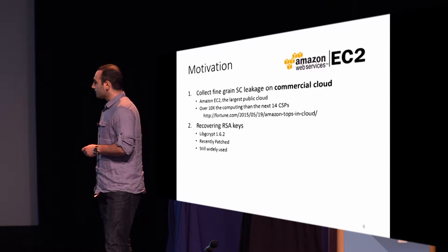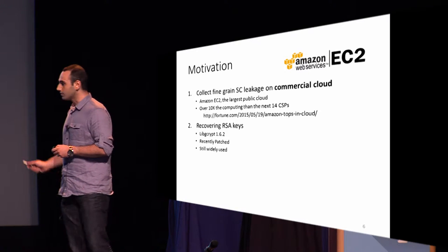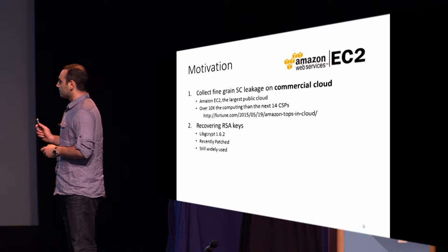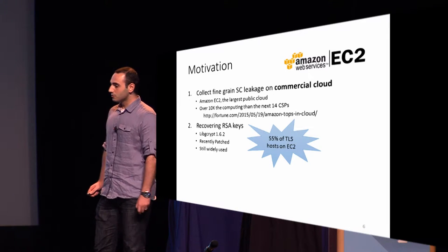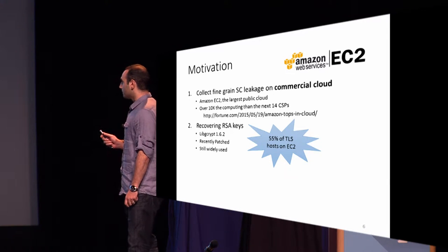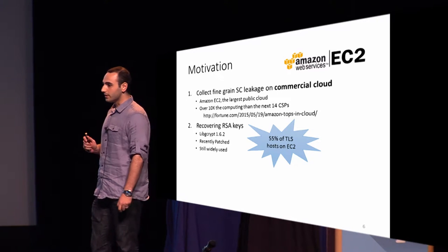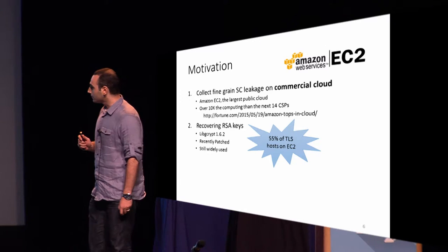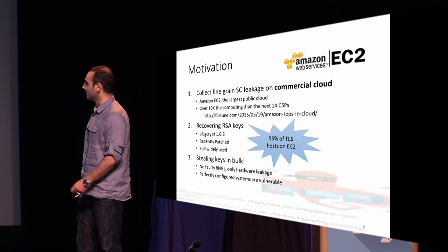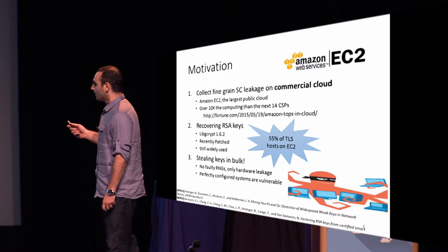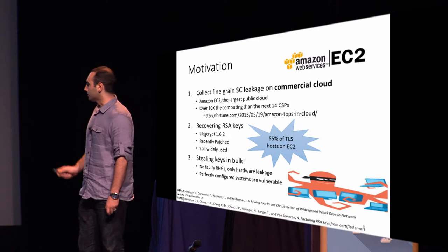Second, we would like to recover RSA keys, and we selected libgcrypt 1.6.2 as our target. It's a recently patched library that is still widely used in the wild. By performing a quick scan in one of the Amazon EC2 regions, we discovered that 55% of TLS hosts actually use outdated libraries that were not updated in the last two years. Third, we want to do this in bulk — we do not rely on faulty random number generators or any misconfigurations.